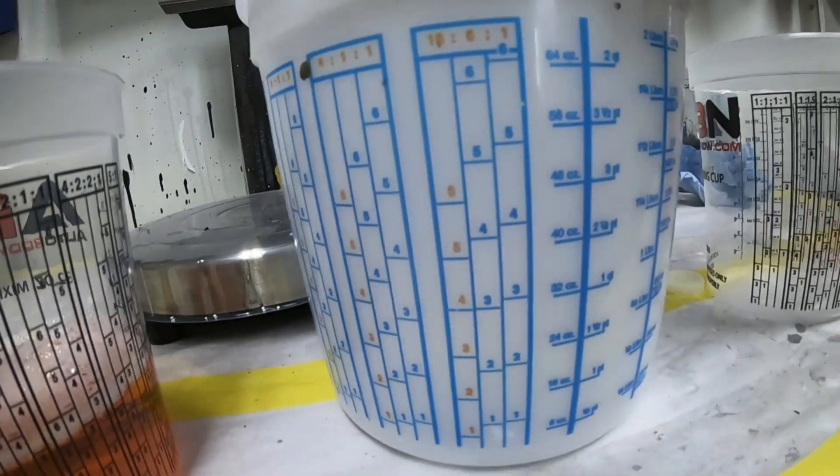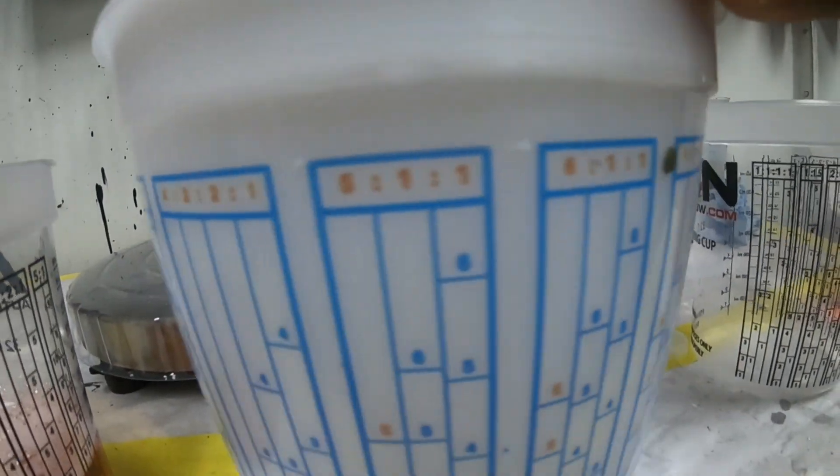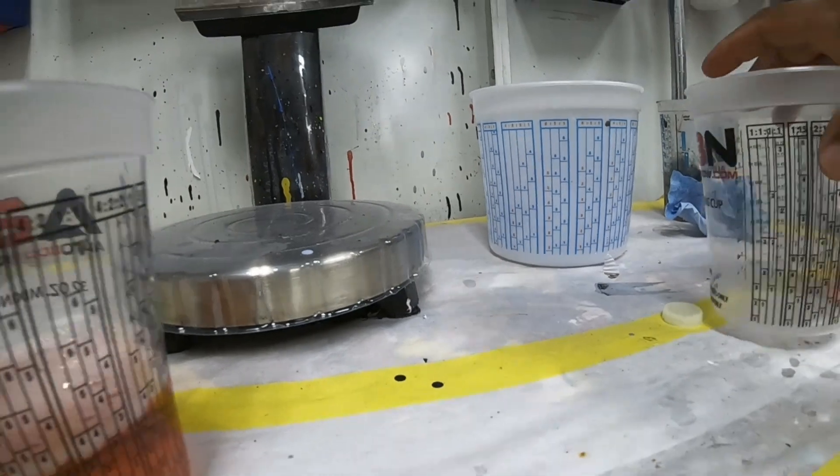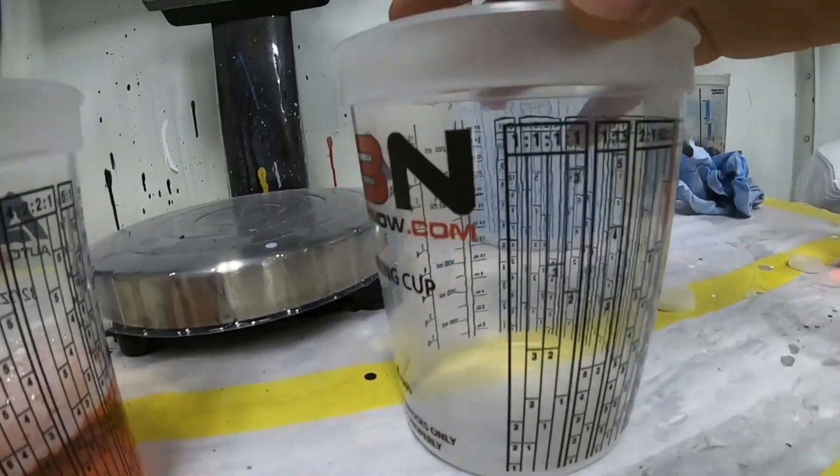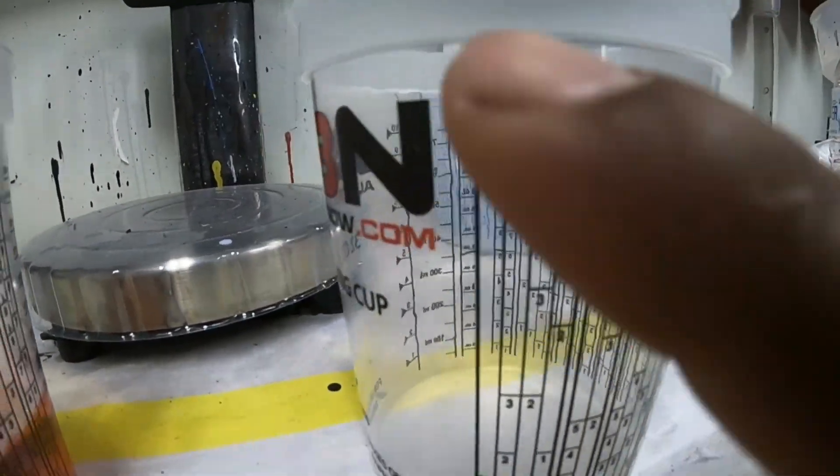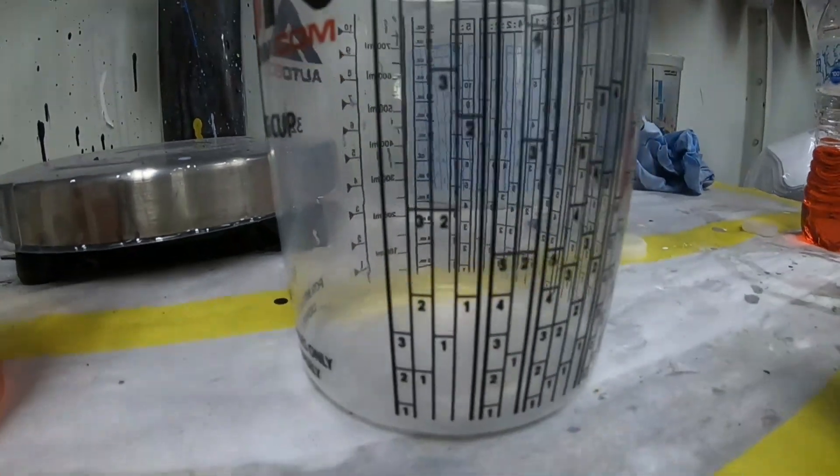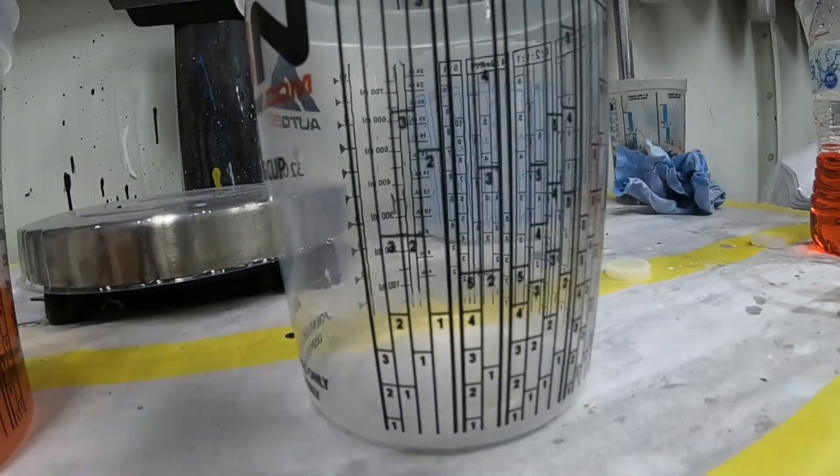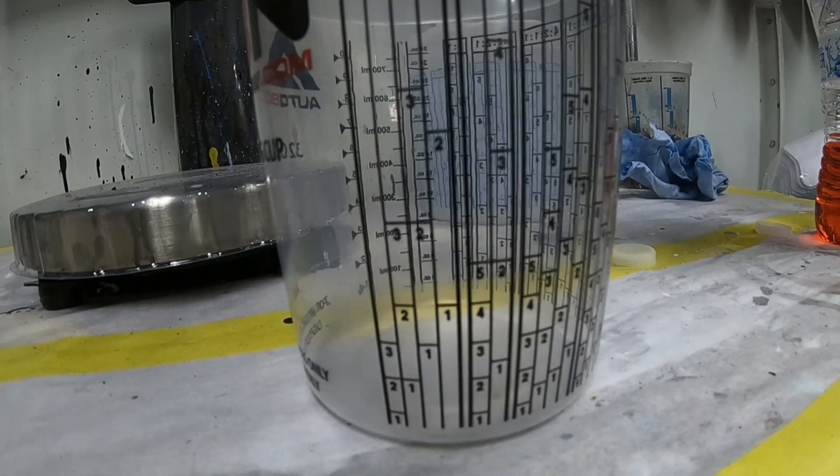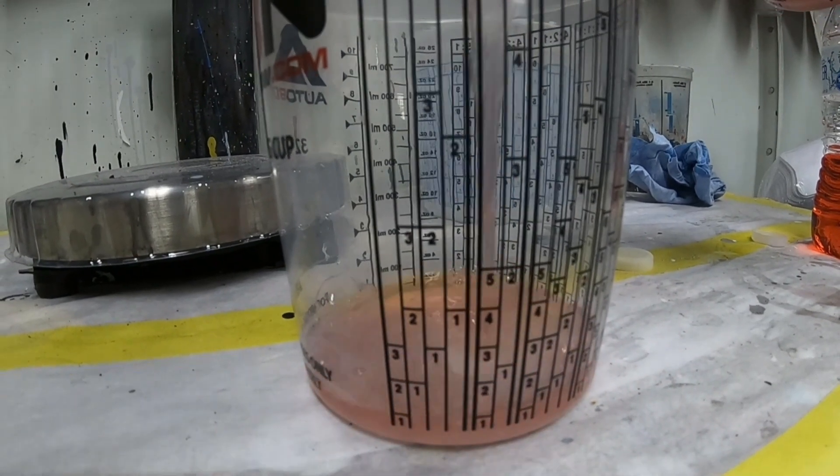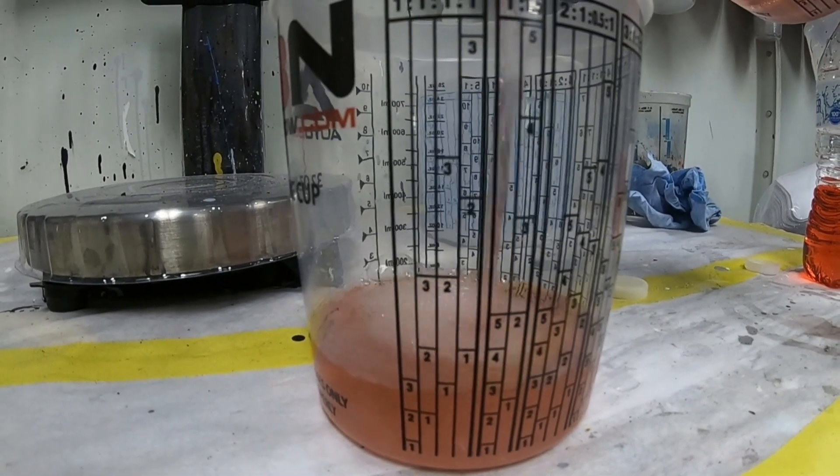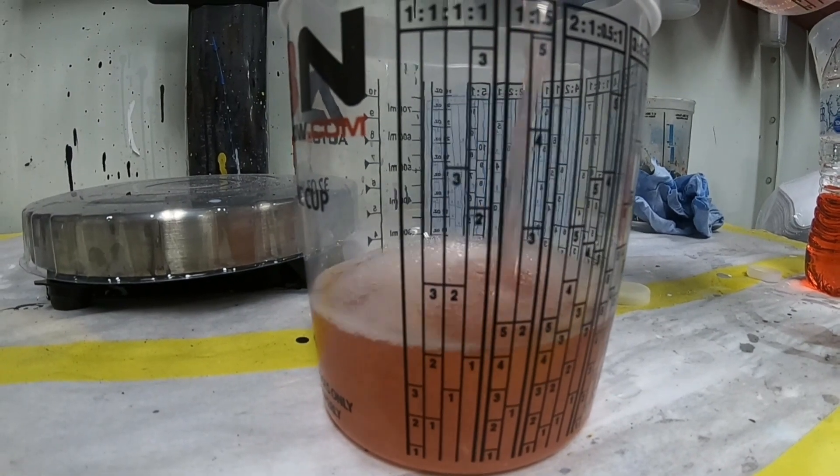I actually don't have a 1 to 1 on this big cup here, so we're going to substitute it for this one. So we go here and we locate the 1 to 1 mix ratio scale, and here we have it. So we're just going to put this in. 1 to 1 just means half and half. It's not complicated at all.